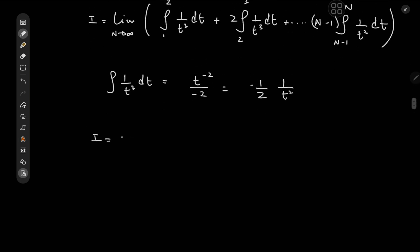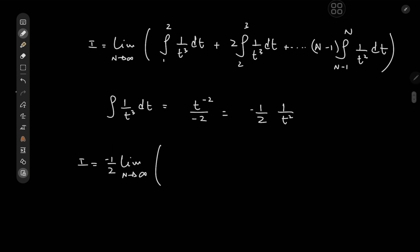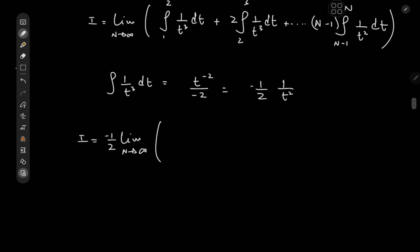So i here equals the limit as n goes to infinity of what exactly do we have? Well the negative 1 half is being factored out so I might as well take care of that first. So we have negative 1 half factored out and now for the first integral we would have 1 over t squared with the limits being 1 and 2. So that's 1 over 2 squared minus 1 over 1 squared.